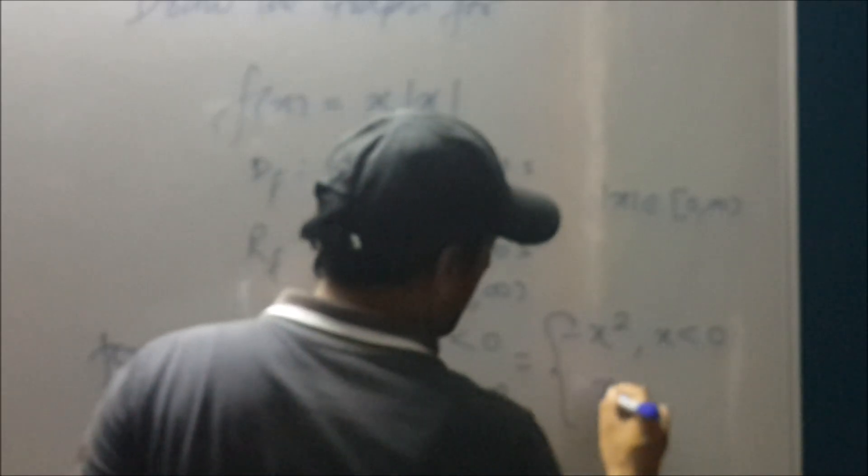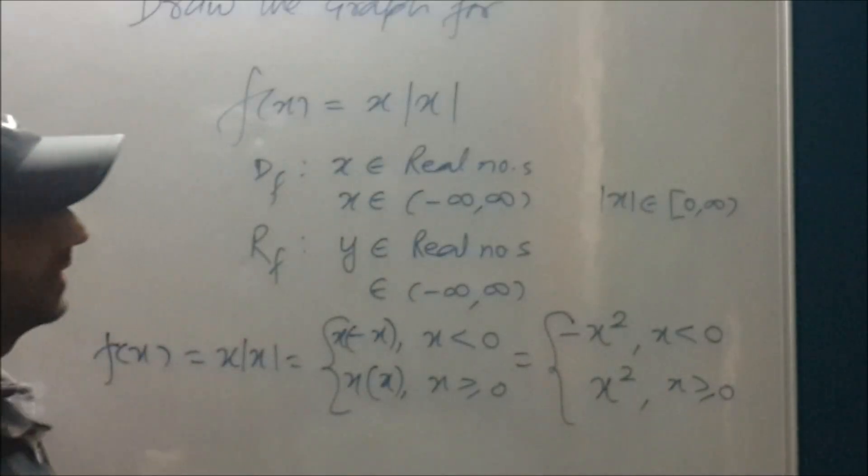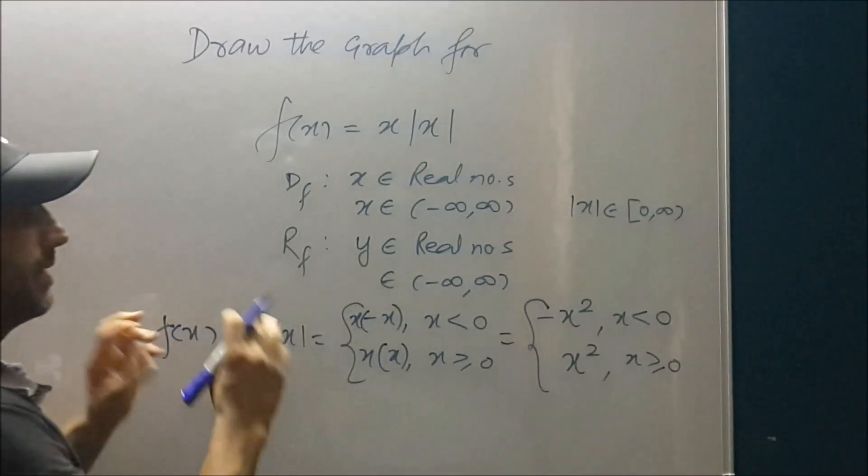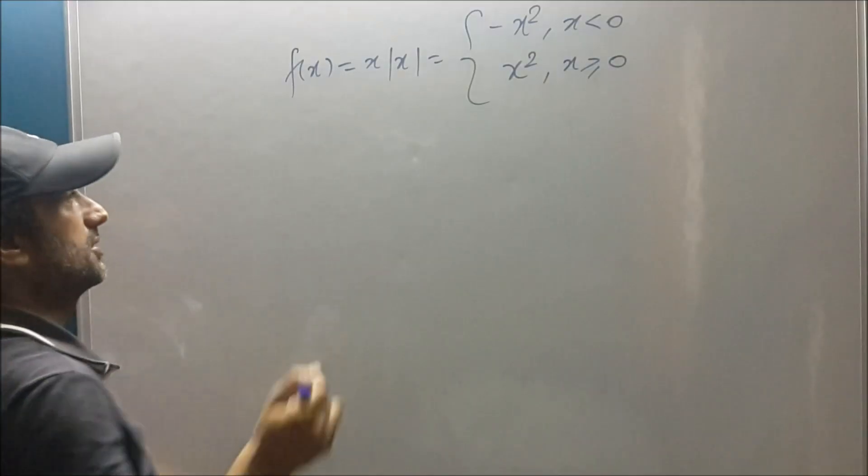That is x into this and x into this. So in terms, the branches for the function will be minus x squared when x is a negative quantity and x squared when x is a non-negative number. So we will make tables and then we will make graph for it. Tables.